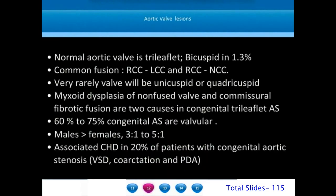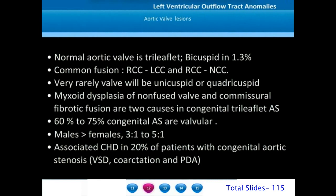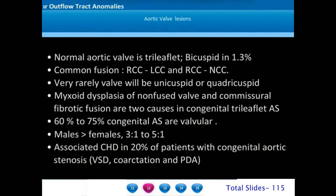With this background of aortic valve anatomy, we move to the different aortic valve lesions. While the normal aortic valve is a tri-leaflet structure, it can be bicuspid in about 1.3% of the population, where the commonest fusion involves the right coronary cusp — either with the left cusp or the non-coronary cusp. Very rarely the valve will be unicuspid or quadricuspid. Sometimes a tri-leaflet aortic valve can have myxoid dysplasia or congenital commissural fibrotic fusion resulting in aortic stenosis. Around two-thirds of congenital aortic stenosis is valvar. This lesion has a high male preponderance and may be associated with VSD, coarctation and patent ductus arteriosus.